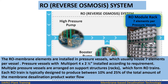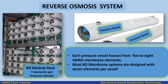The RO membrane elements are installed in pressure vessels, which usually house seven elements per vessel. Pressure vessels with multiport — four ports in two and one-half inch size — are installed according to requirement. Multiple pressure vessels are arranged on support structures, or racks, which form RO trains. Each RO train is typically designed to produce between 10% and 25% of the total membrane desalination product water flow. Each pressure vessel houses from five to eight SWRO membrane elements, with most RO membrane systems designed with seven elements per vessel.